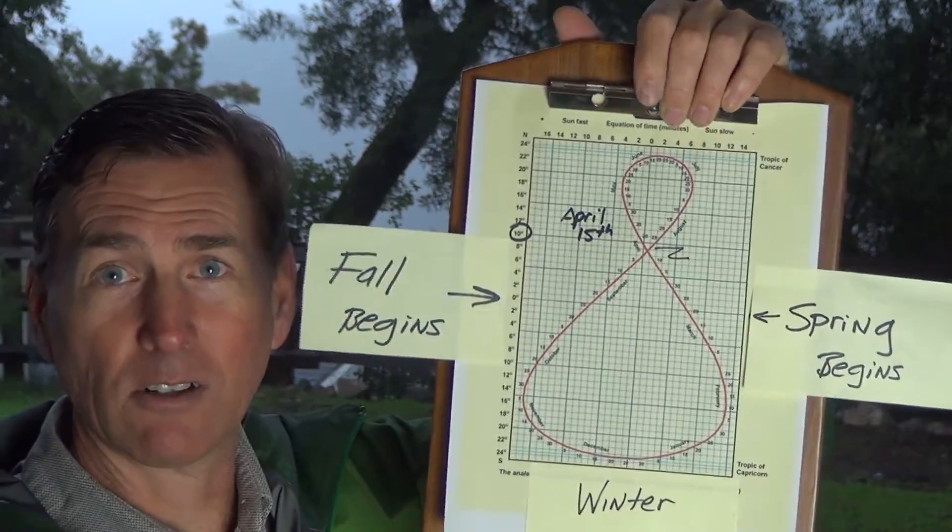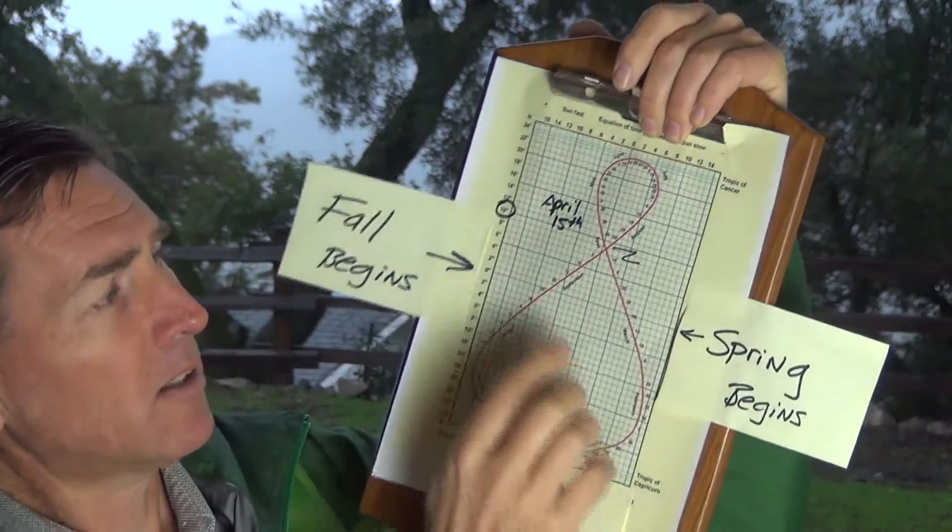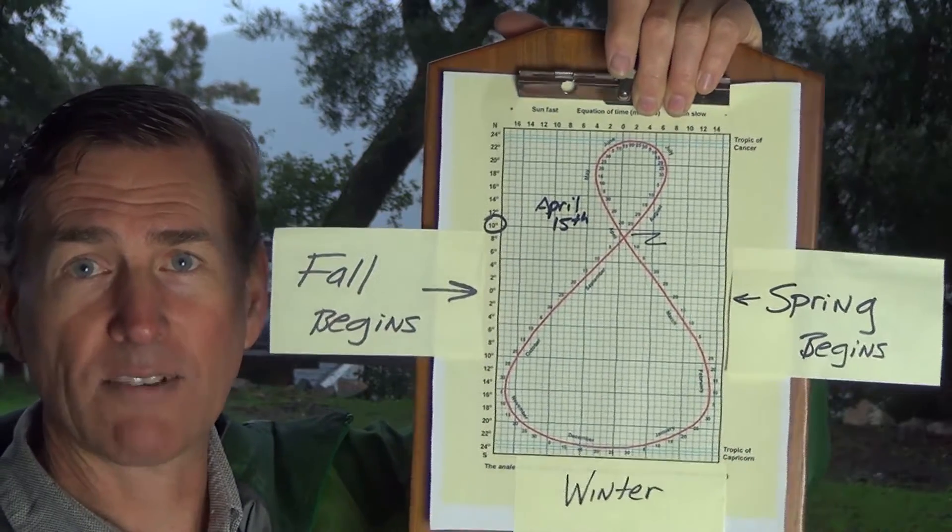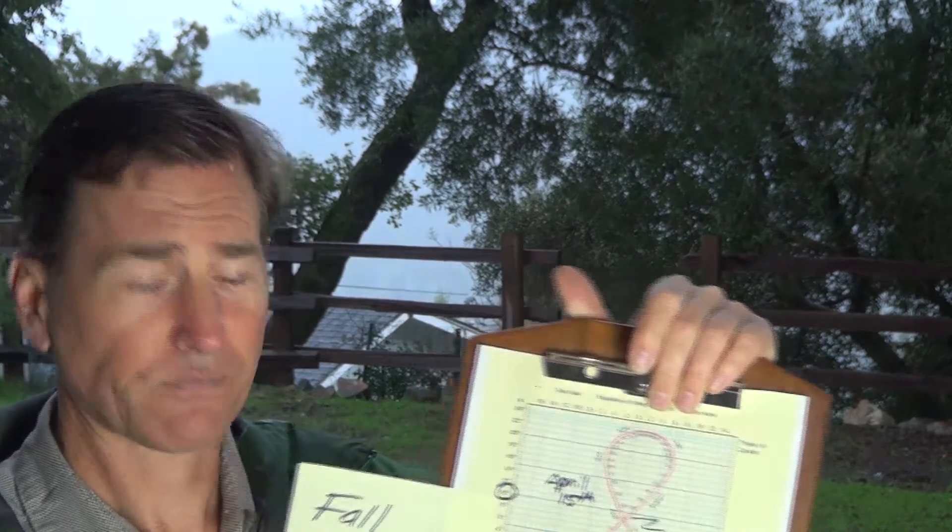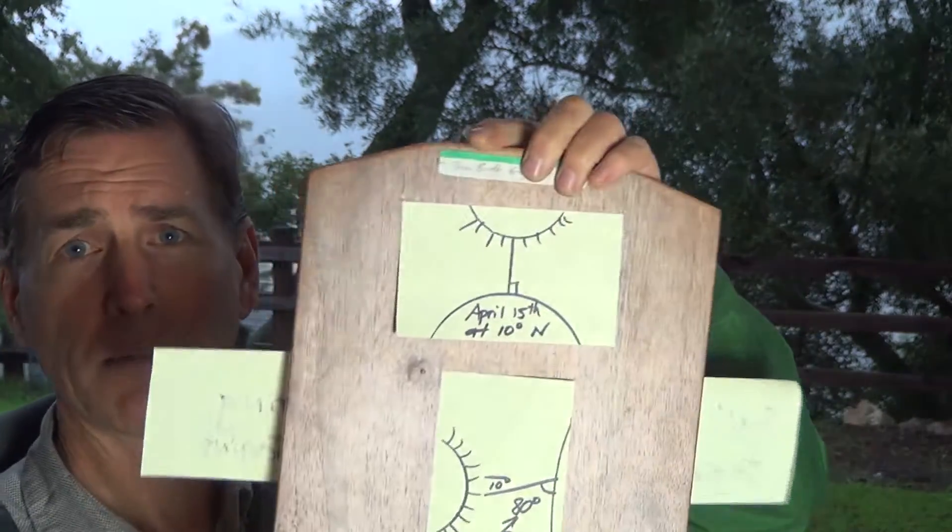And I wanted to talk about, though, the second real use of this, which was for navigation, particularly for mariners out at sea who could not tell where they were. They had no indication whatsoever. So I wanted to show you something over here on the back.